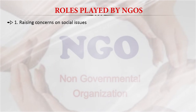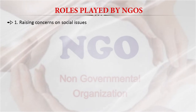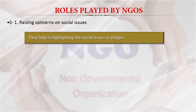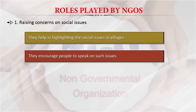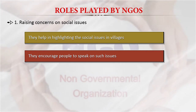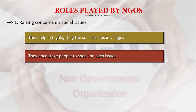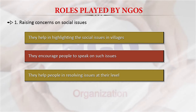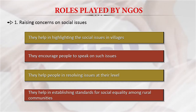There is a broader concept and a more defined concept of NGO roles. Among the defined roles, NGOs raise concerns on social issues like child marriages, highlighting these issues in villages and encouraging people to speak about them — because even literate people are often hesitant to speak about issues like mental health. NGOs also pitch in to resolve issues at the local level and help establish standards for social equality amongst rural communities.